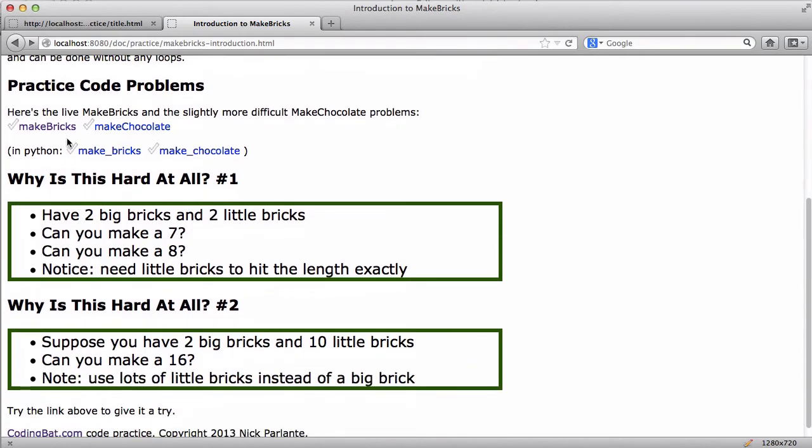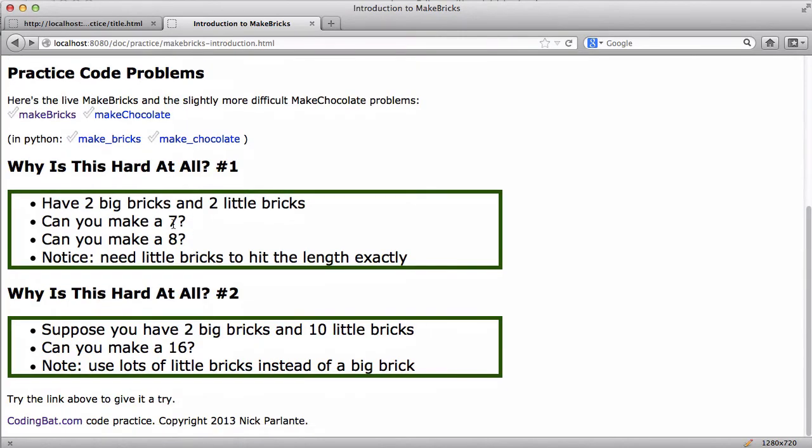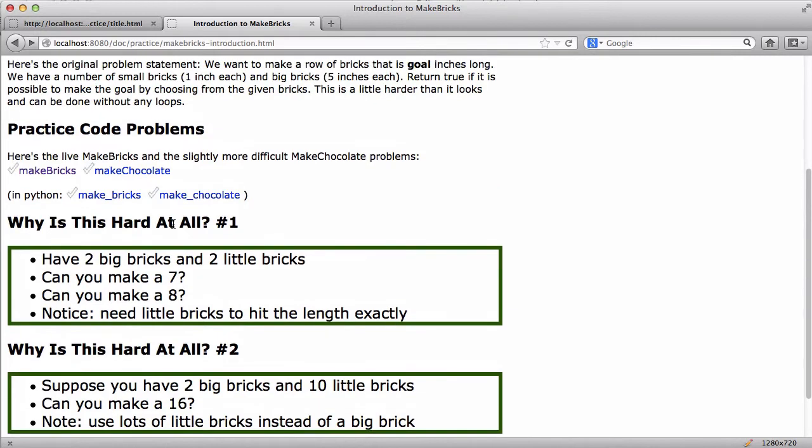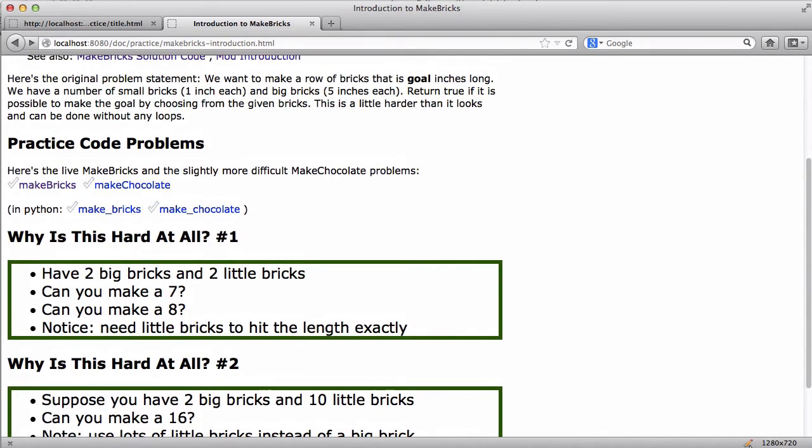So here's links to the problems in Java and Python so you can give it a shot. But first I'll talk a little bit about why is this hard at all. So I want to imagine the case that you've got—I'll make a little drawing here. Say you've got two big bricks and two little bricks. So there's the two big bricks we'll just imagine and here's two little ones. And so I'll just think about a couple problems here.